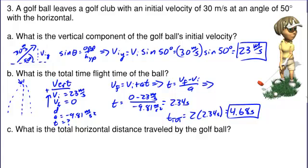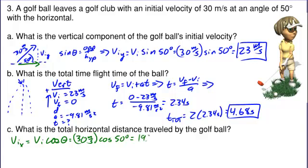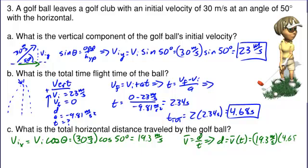Finally, what horizontal distance did the golf ball travel? Now we're looking at the horizontal problem, so it's helpful to know the horizontal component of its initial velocity: vi x equals vi times cosine of the angle, or 30 meters per second times the cosine of 50 degrees, which is about 19.3 meters per second. Horizontally, displacement equals average velocity times total time, or 19.3 meters per second times 4.68 seconds, giving a displacement of about 90.4 meters in the x direction.